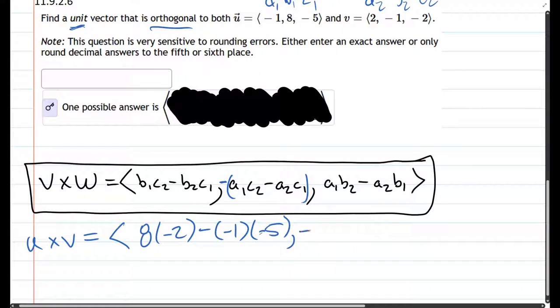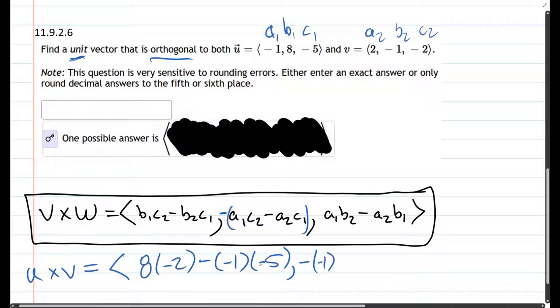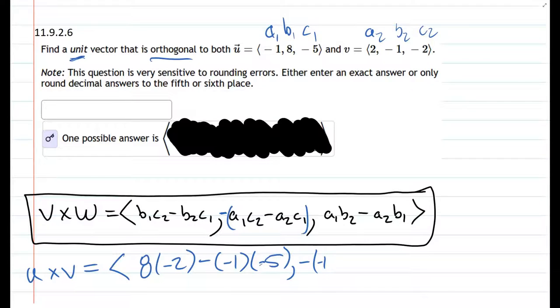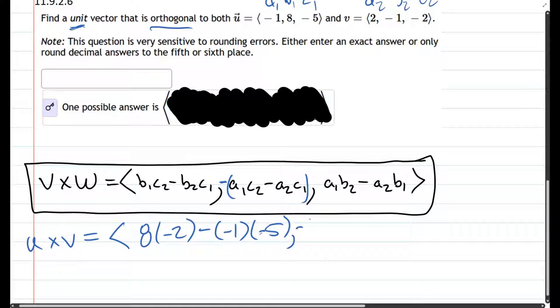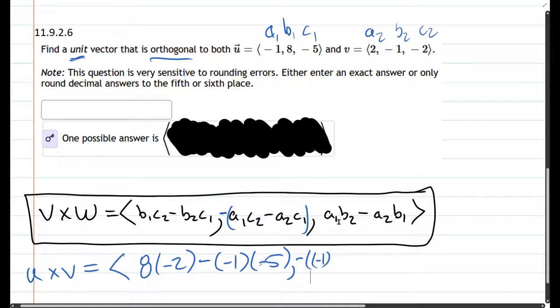I'm gonna need to write a little smaller. The y coordinate is negative a1, that's negative 1, times c2, which is negative 2, minus a2, which is positive 2, times c1 which is negative 5. So that's all the second or the y coordinate.